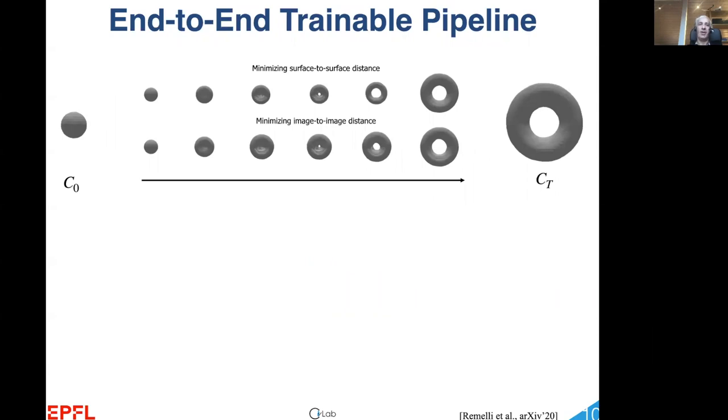Because the loss is now differentiable, we can minimize it using a gradient-based technique. This enables us to start from the sphere on the left side and turn it into the torus on the right.